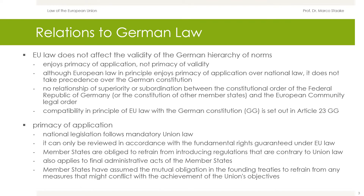The compatibility in principle of European law with the German Constitution is set out in Article 23 of the Basic Law (Grundgesetz). All public authorities, including regional authorities, and all national courts must observe the primacy of application. They are not authorized to review acts of the Union institutions for their compatibility with the fundamental rights of national constitutions. This is because if national legislation follows mandatory Union law, it can only be reviewed in accordance with the fundamental rights guaranteed under Union law.